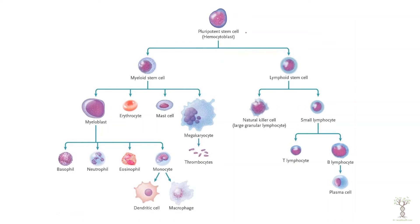The bone marrow contains pluripotent stem cells — also called hematopoietic stem cells — which have the ability to differentiate into any of the blood cells, both red blood cells and white blood cells. The white blood cells are the immune cells and there are many different kinds. In the bone marrow, specifically the red bone marrow, we have these stem cells. There is also yellow bone marrow which stores fat. There are two main lineages: the myeloid stem cells and the lymphoid stem cells.